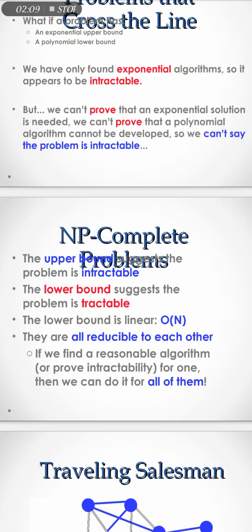The upper bound suggests the problem is intractable; the lower bound suggests the problem is traceable. As we discussed in the previous slide, the lower bound is polynomial and the upper bound is exponential. So the upper bound suggests the problem is intractable — we cannot trace it — while the polynomial lower bound suggests the problem is traceable.